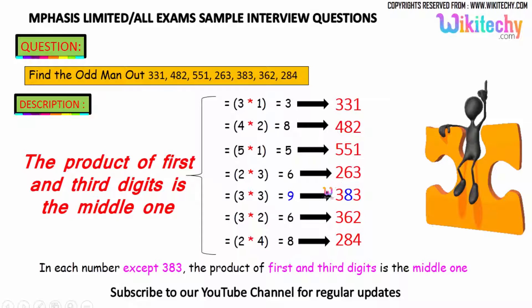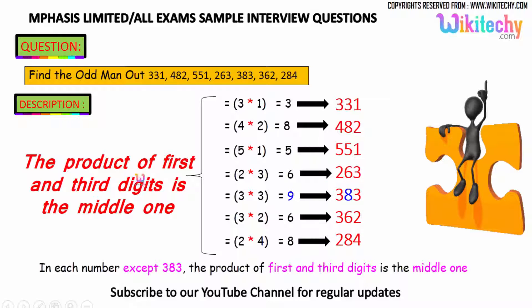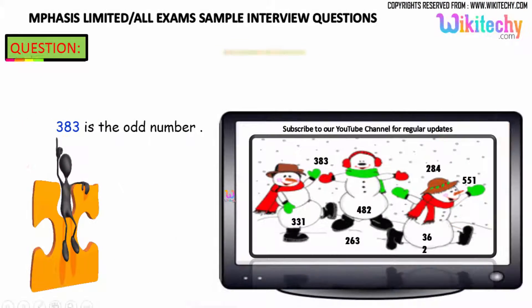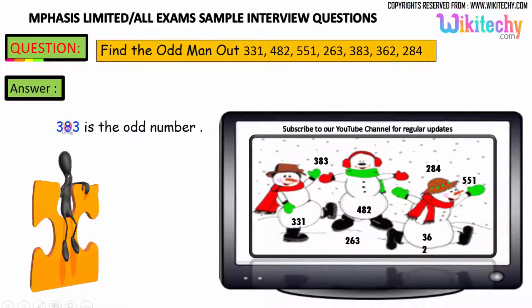The odd one gives 3, 8, 3 — but it should be 3, 9, 3. The product of the first and the third digit equals the middle digit. That is the key tip for this problem. So the answer is 383 — that is the odd man out.